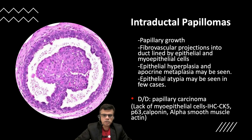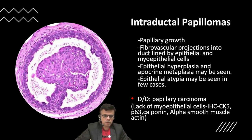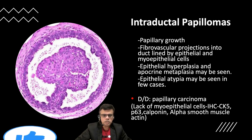The common differential diagnoses include intraductal papillary carcinoma — that is DCIS — or it could be an invasive papillary carcinoma. The lack of myoepithelial cells is seen in invasive papillary cancers, and myoepithelial cells are also lacking in the fibrovascular core region in intraductal papillary carcinoma. Common myoepithelial immunohistochemical markers used are CK5, p63, calponin, and alpha smooth muscle actin.